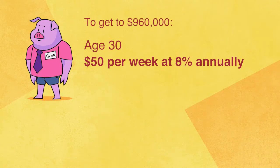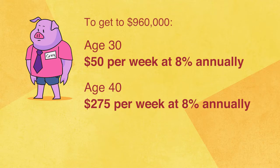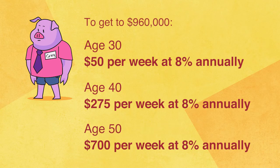If you're in your 40s or 50s, do not get the illusion that you cannot get these kind of numbers. You might have the advantage of higher earning potential. You can achieve that 960,000 balance too, but it's going to involve larger contributions. If you're 40 you'll need to contribute about 275 dollars a week; if you're 50, about 700 dollars a week. It's totally achievable, but you'd have to make larger contributions because you don't have the same advantage of time.